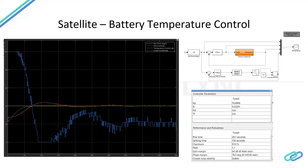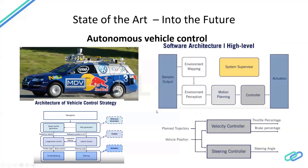That brings us to the end of the satellite battery temperature control problem. This is just to show how much controls is out there in the field right now. For example, in autonomous vehicle control, there is perception using lidar and cameras that produce speed profiles. Driving a speed profile converts into a longitudinal control problem and a lateral control problem — controlling throttle and steering. This is one of the areas of controls I enjoy, and I'm trying to show you the scale of how controls is applied today.